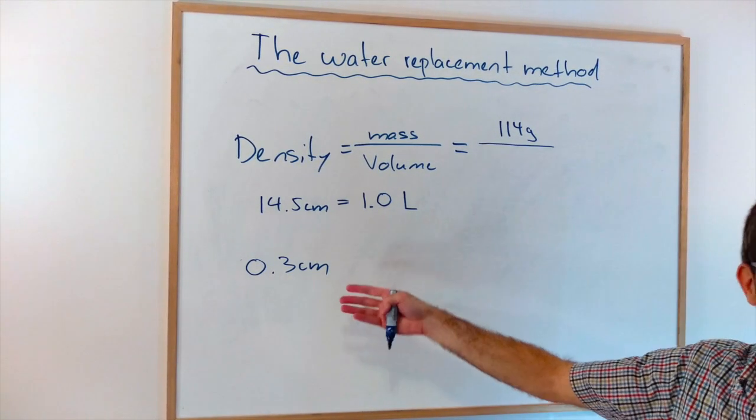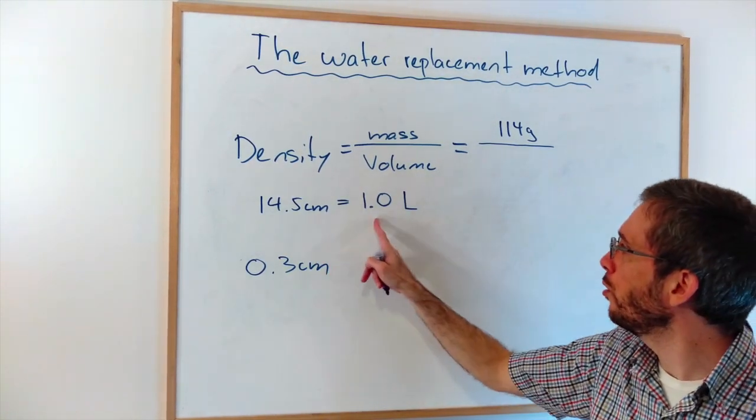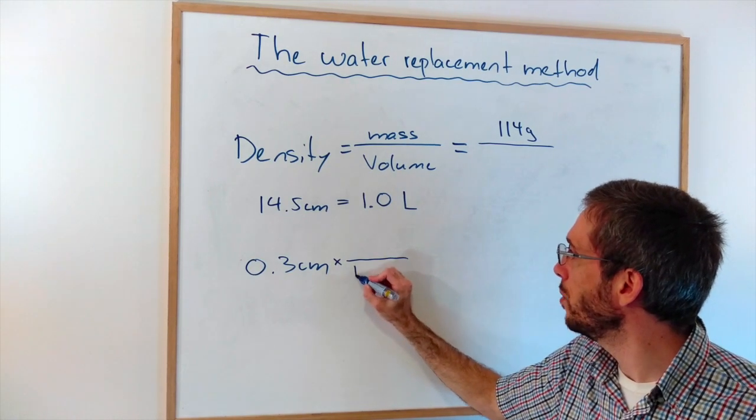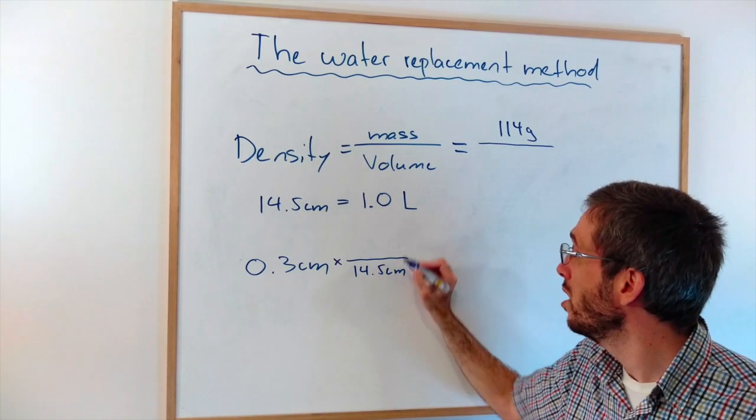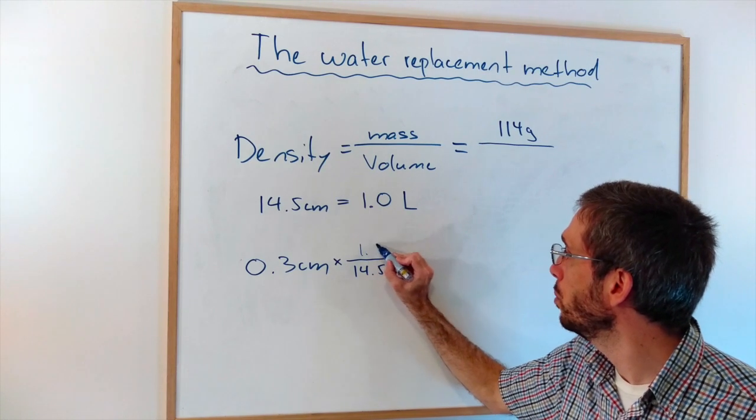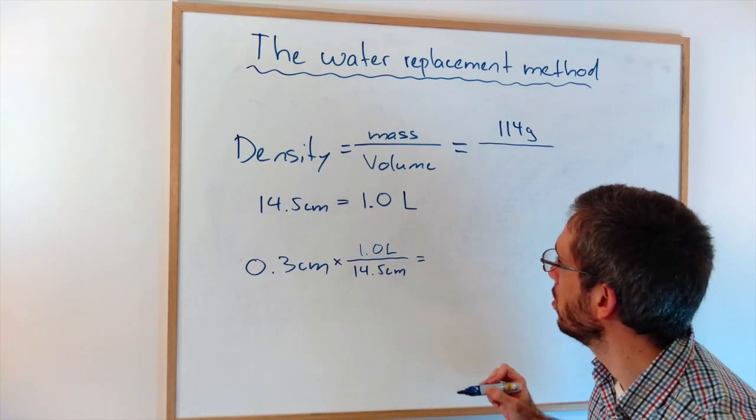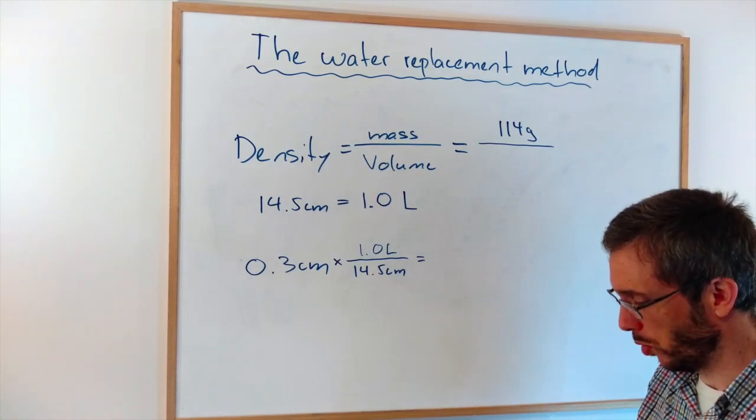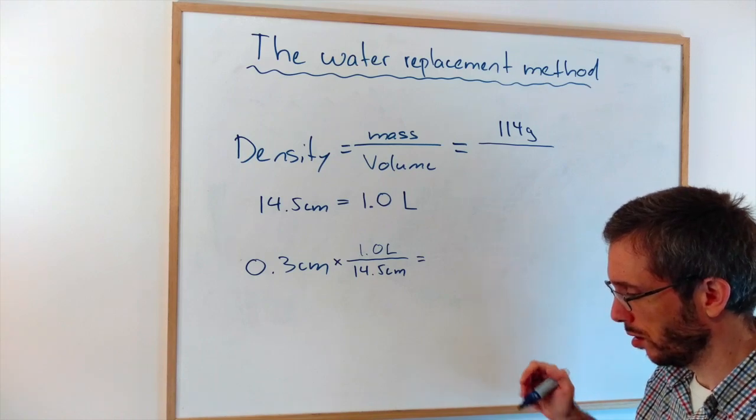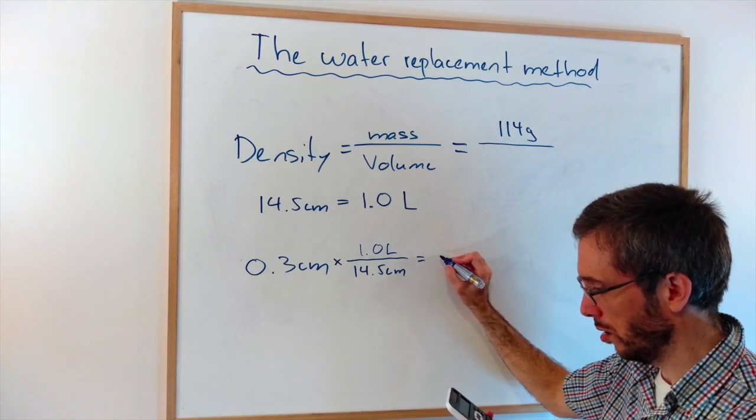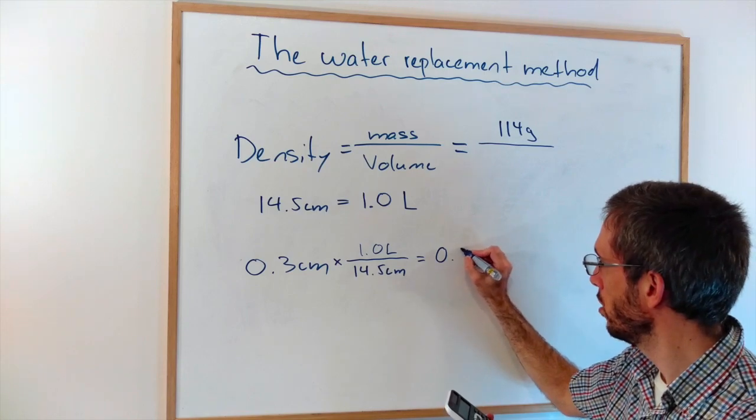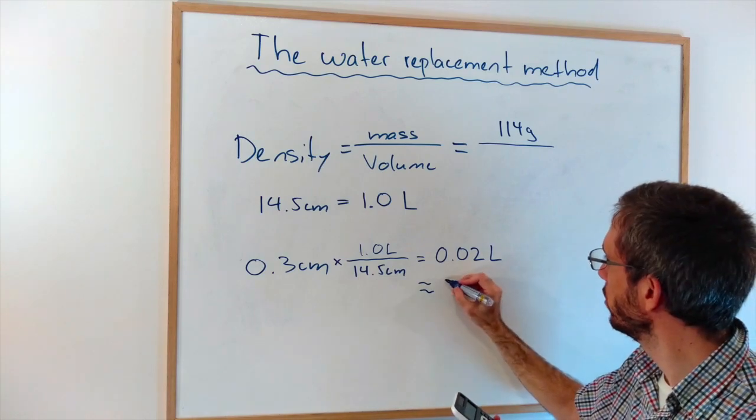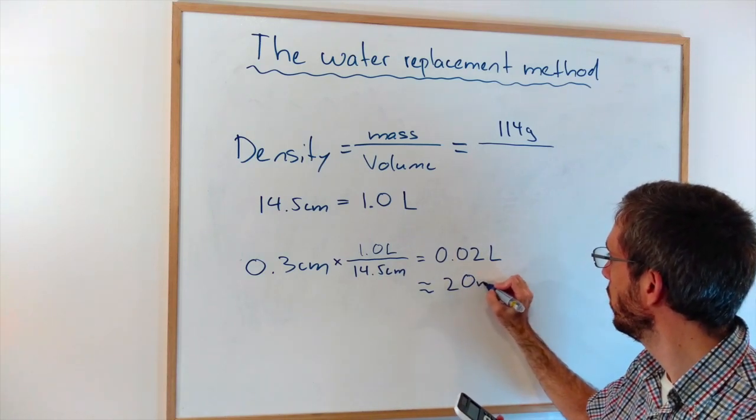Now how do I convert the centimeters into volume? Well, I have my own unique conversion here. When I get rid of the centimeters, I put my 14.5 centimeters at the bottom and my liters at the top. So I get 0.3 divided by 14.5 gives me 0.02 liters or around 20 milliliters.